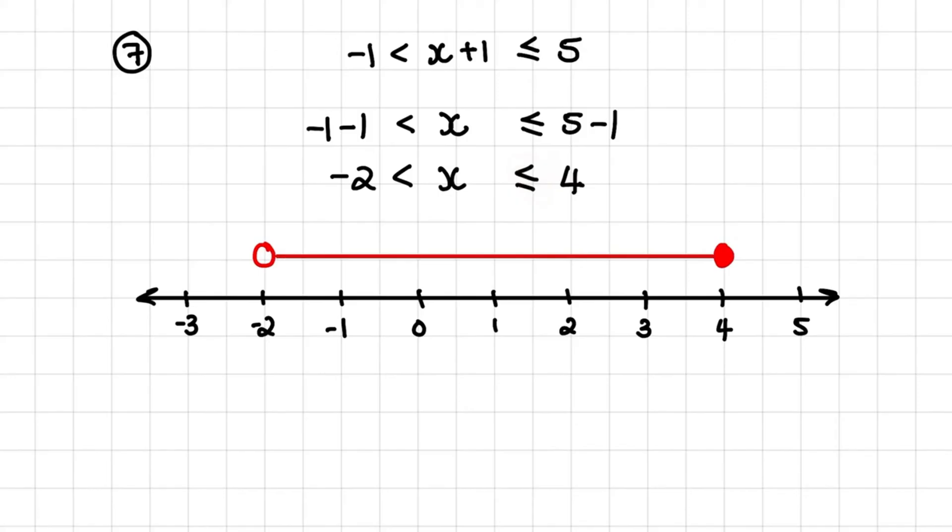What we learn from this inequality is that x can be any value between negative 2 but not equal to negative 2 all the way up to 4 including 4. So in our interval notation, our minimum value would be negative 2 with a curved bracket and our maximum value would be 4 with a square bracket.